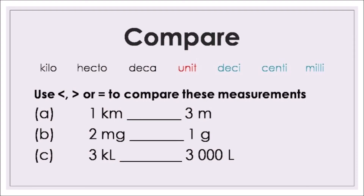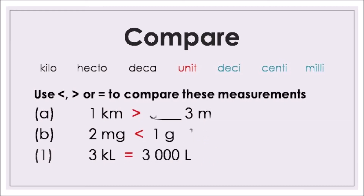Now for comparison — use less than, greater than, or equal to. A) One kilometre compared to three metres: one kilometre is greater than three metres. B) Two milligrams compared to one gram: two milligrams is less than one gram. C) Three kiloliters compared to three thousand liters: they are equal.